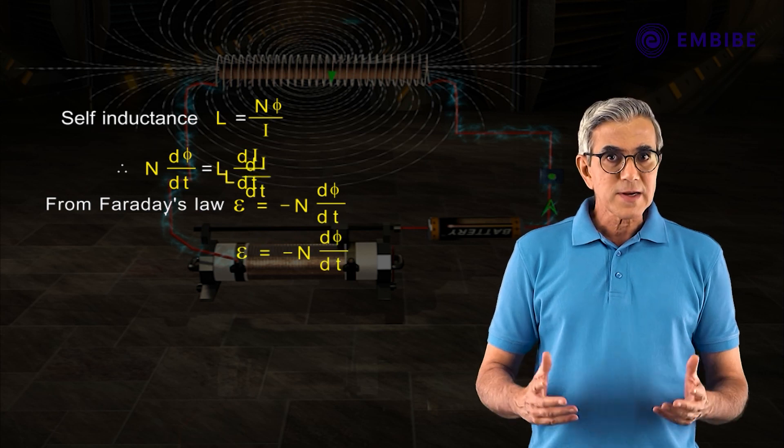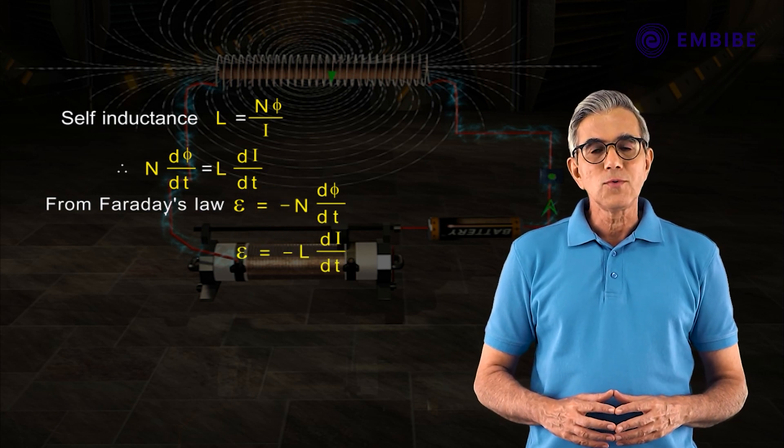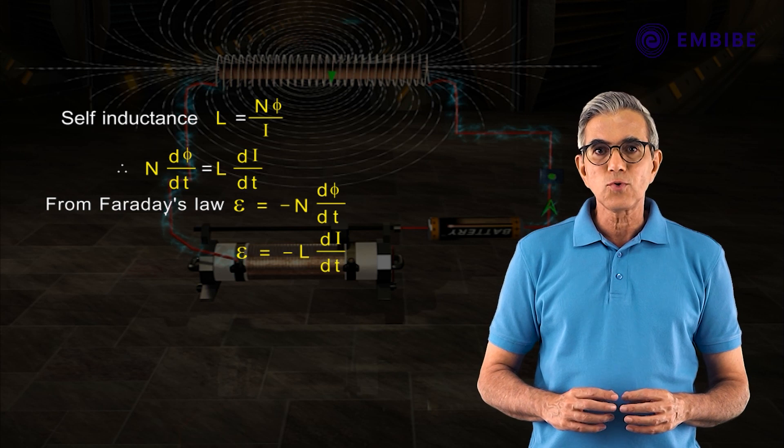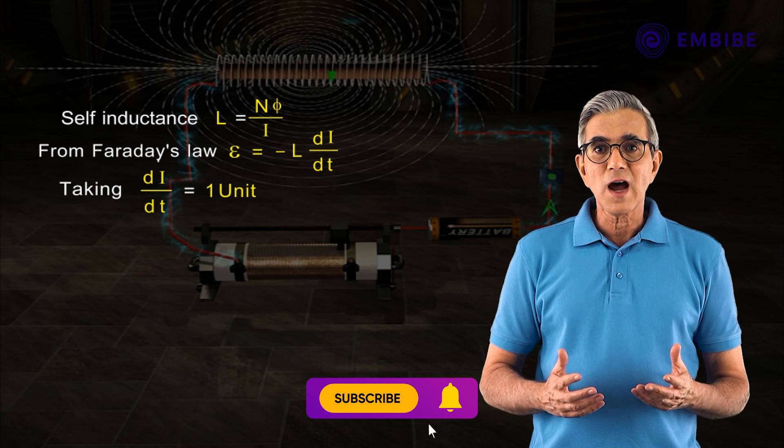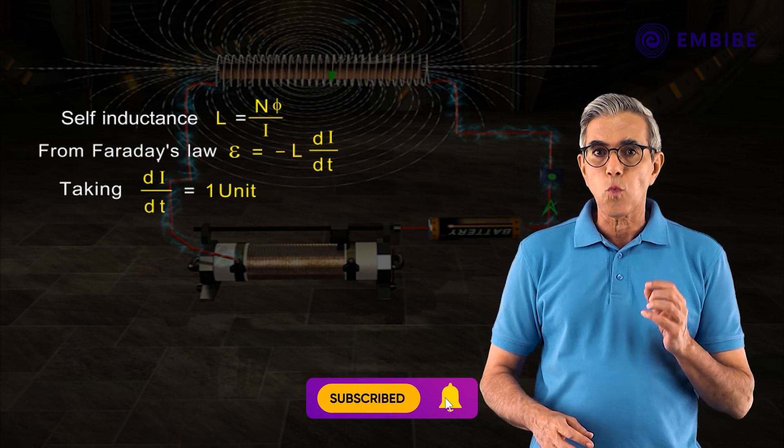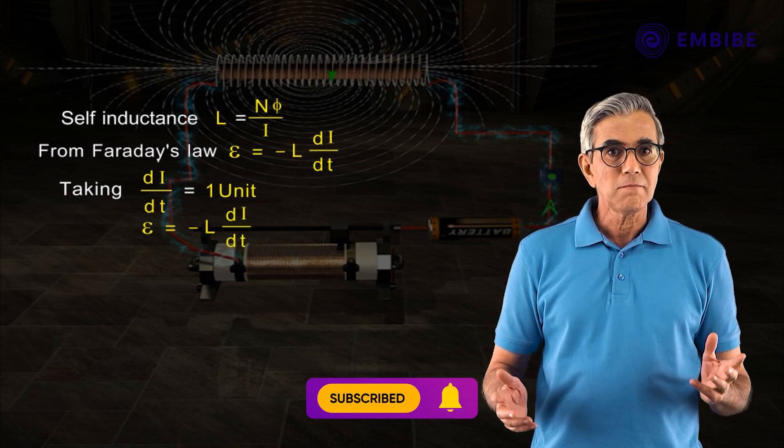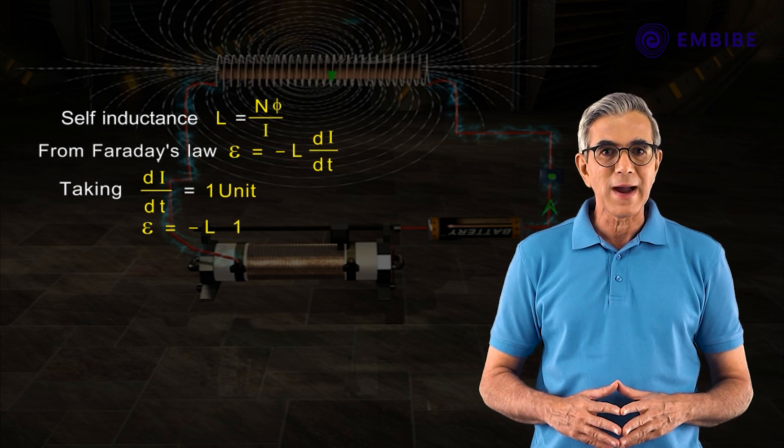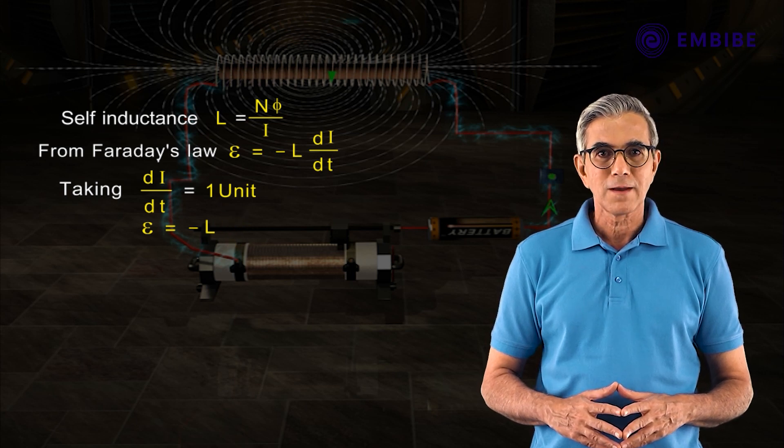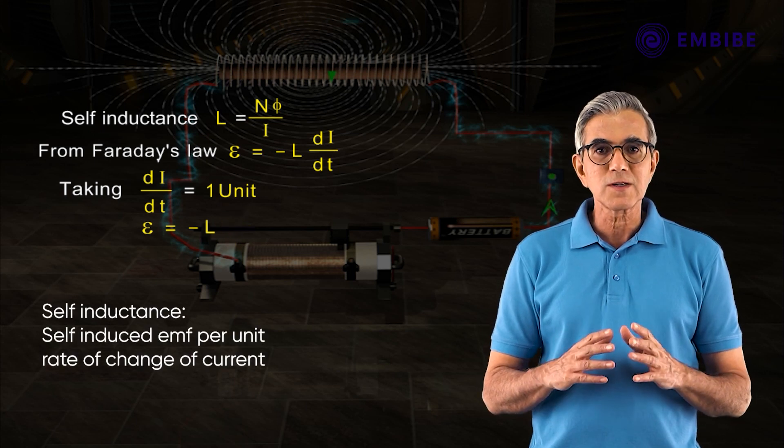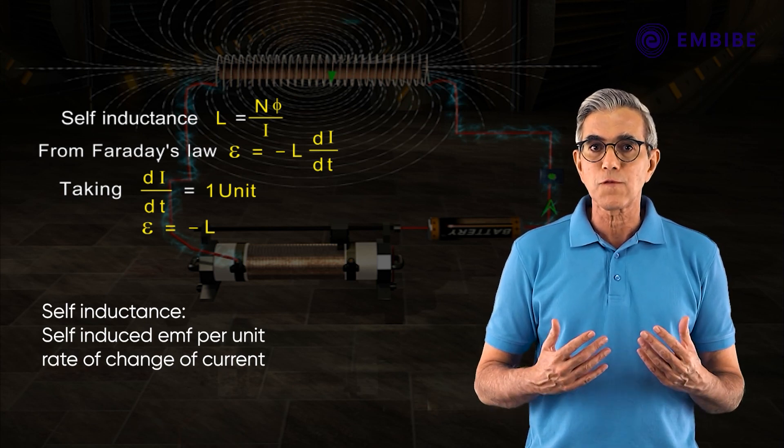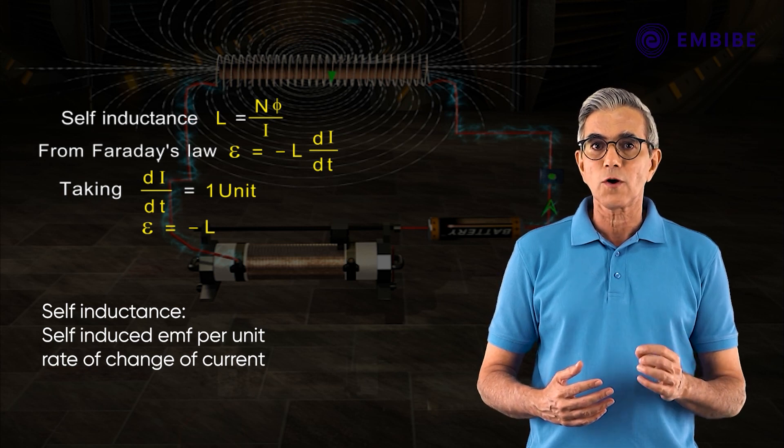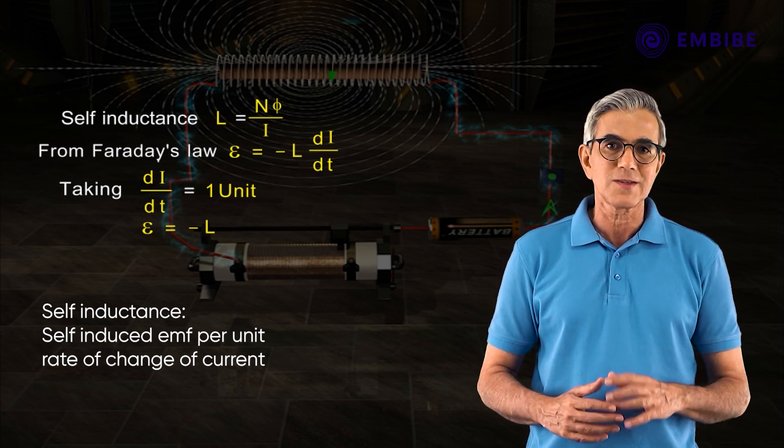we get E = -L·dI/dt. If we take dI/dt = 1 unit, then E = -L. So the self-inductance of a circuit can be defined as the self-induced electromotive force per unit rate of change of the current in the circuit.